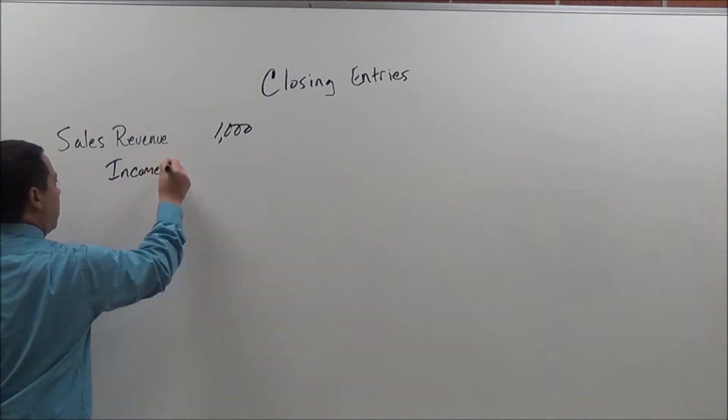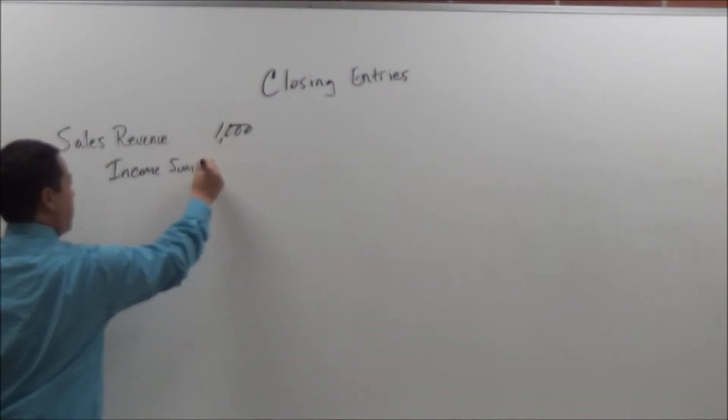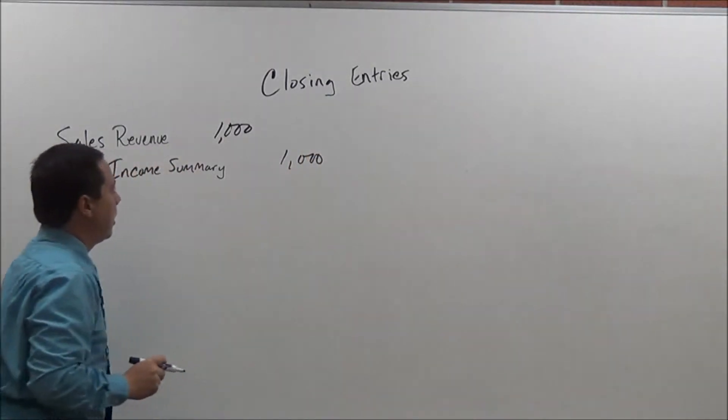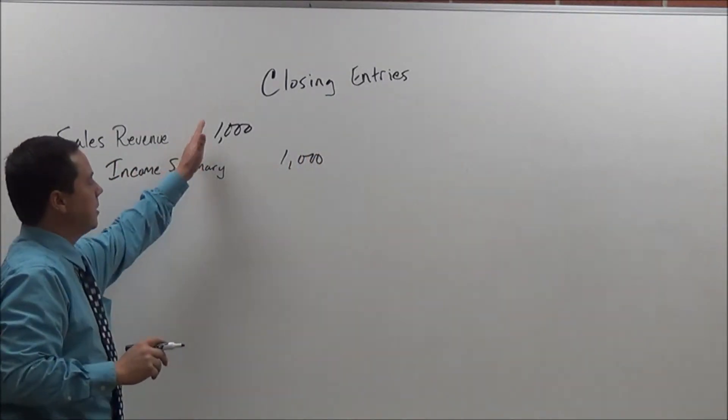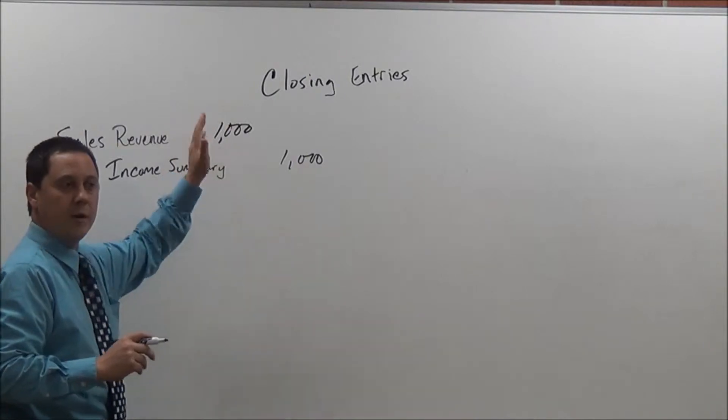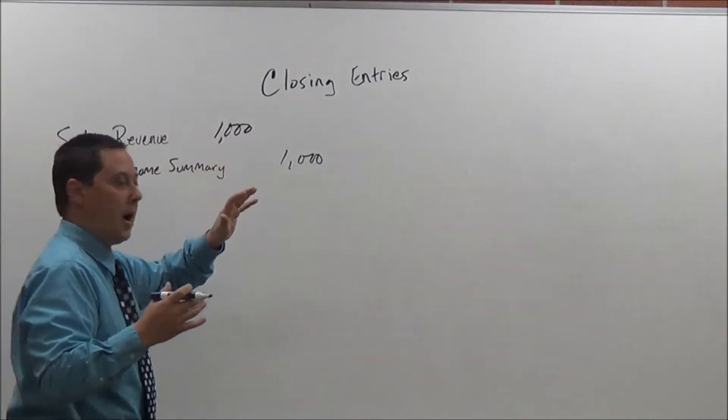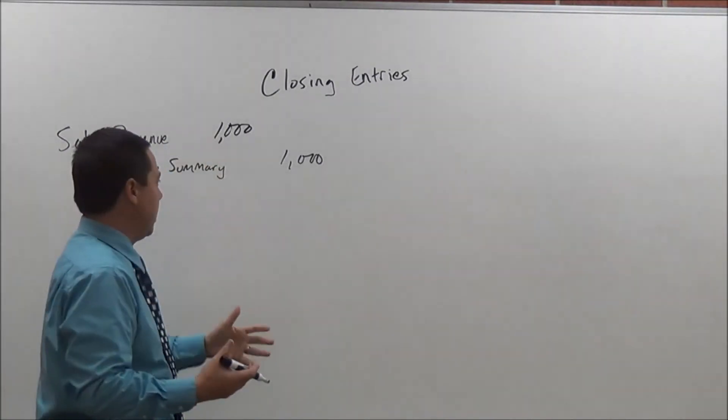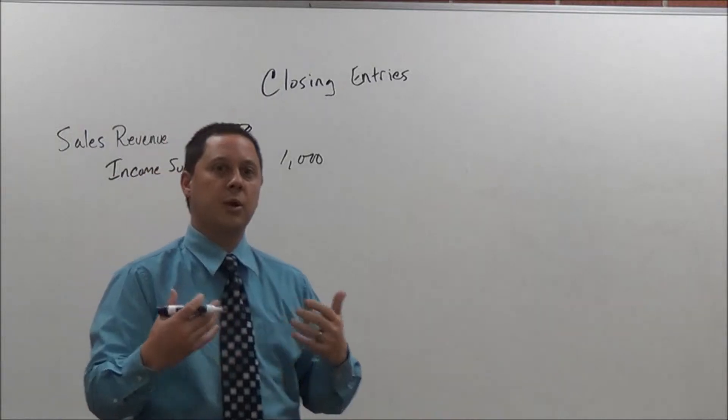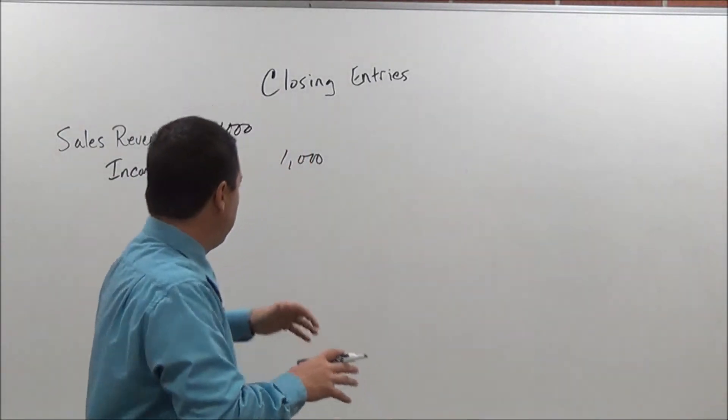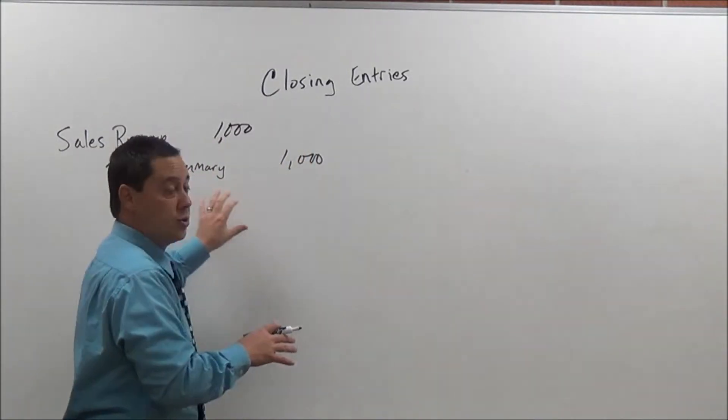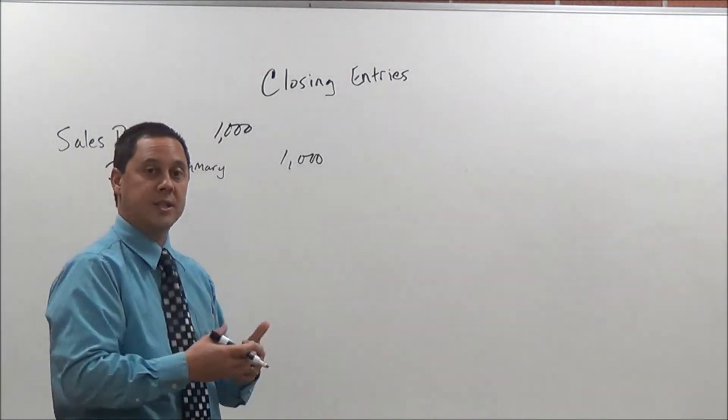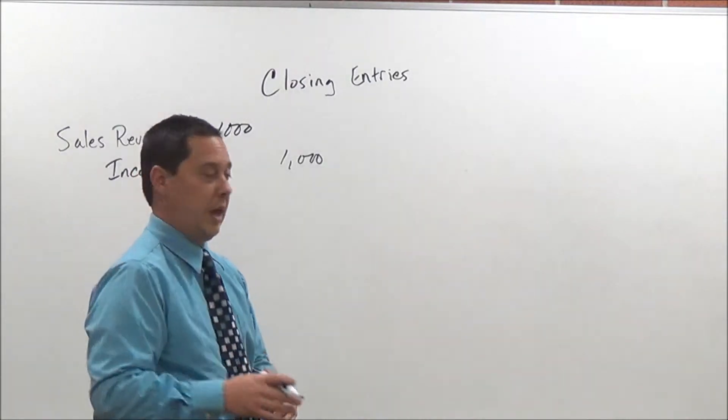Now by doing this, I have basically taken that credit that I had value of $1,000 in that sales revenue account by debiting it and now taking it to zero. That's what we're doing here. This income summary is a temporary placeholder that we use to move the revenues and our expenses to where we need them to go. At the end of that, our net income or net loss into our retained earnings. And we'll show you that as I get to it.